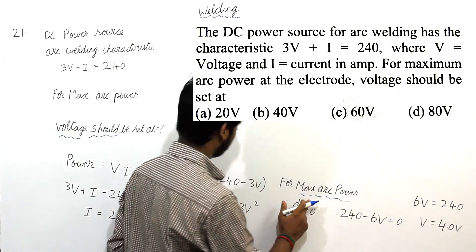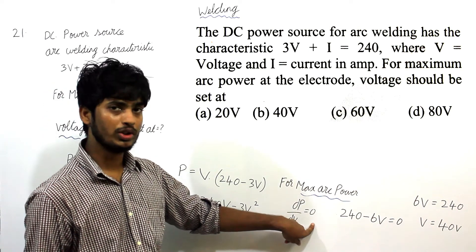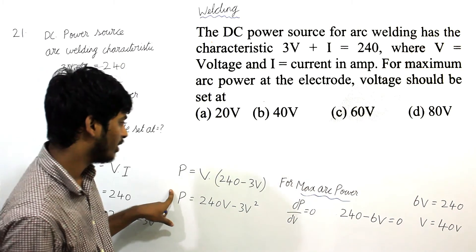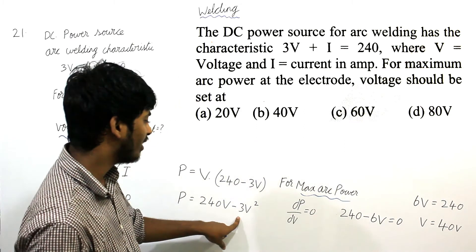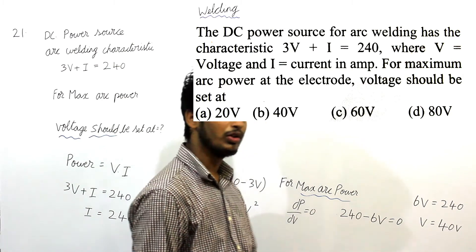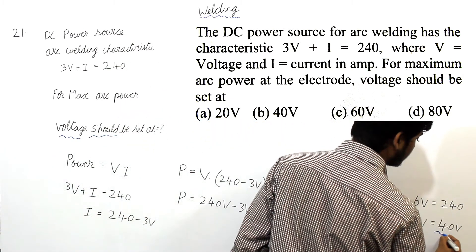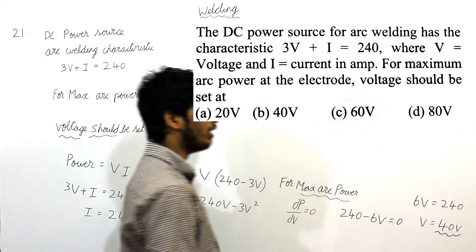For maximum arc power, differentiate this power equation with respect to V and set equal to 0. This gives dP/dV = 240 - 6V = 0, so 6V = 240, which means V = 40 volts.